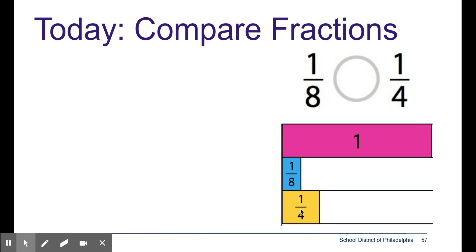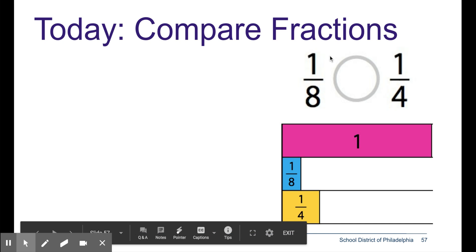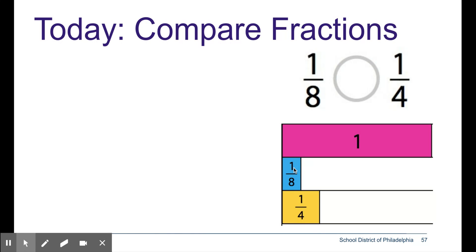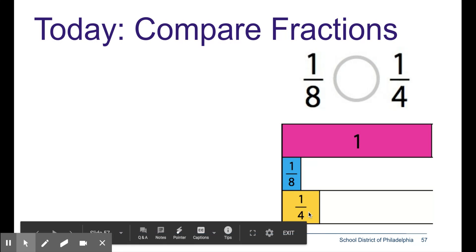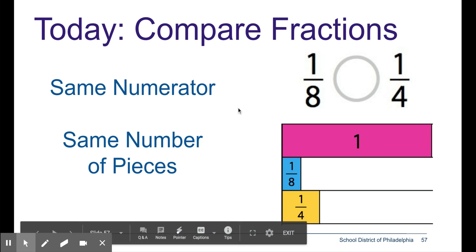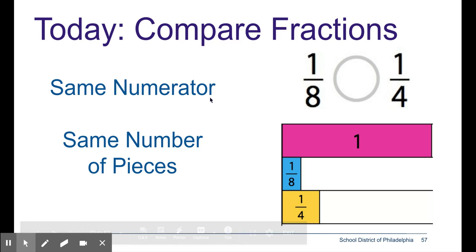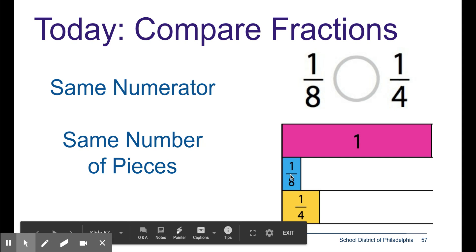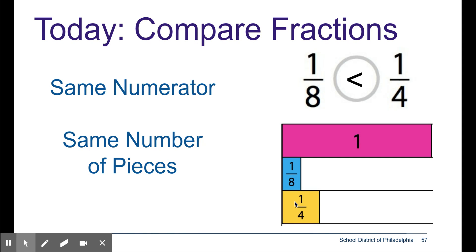But in both cases we only have one piece, 1 eighth. Well I notice that 1 eighth is smaller than 1 fourth. So I know that when I have the same numerator it's easy to compare my fractions because they have the same number of pieces. Is 1 eighth size piece bigger or smaller than 1 fourth size piece? In this case I know that 1 fourth size piece is greater.